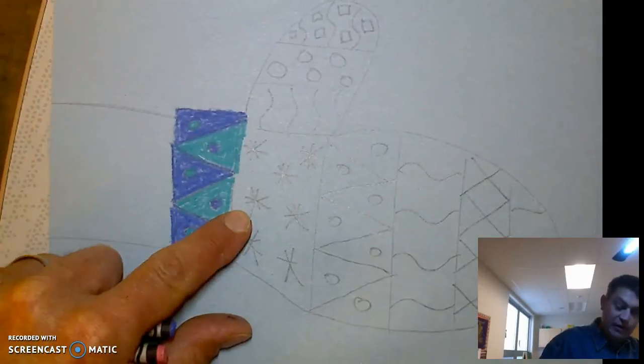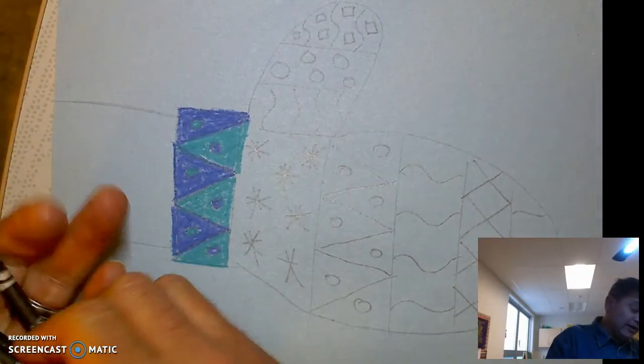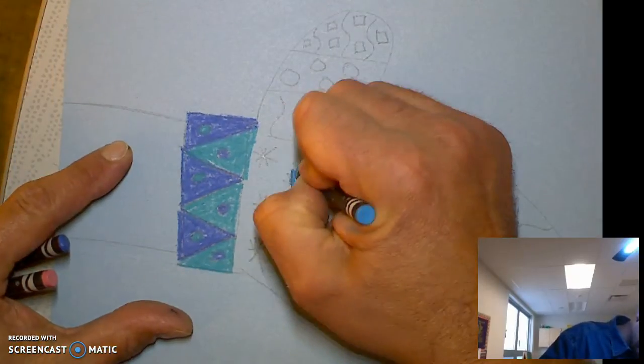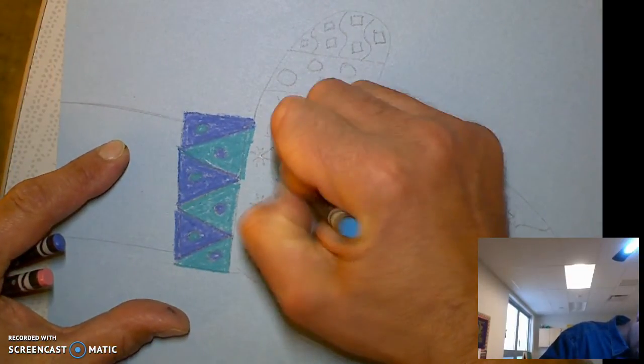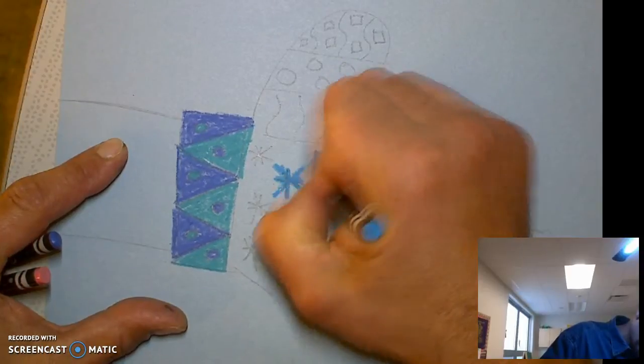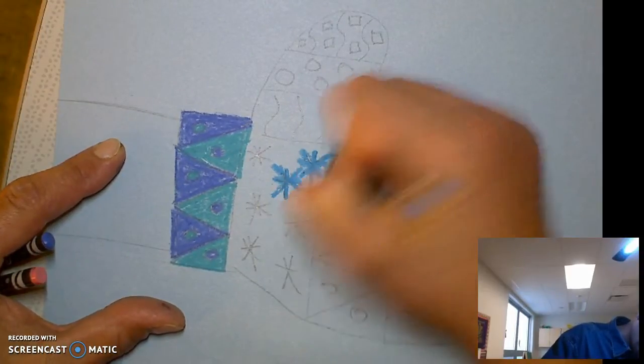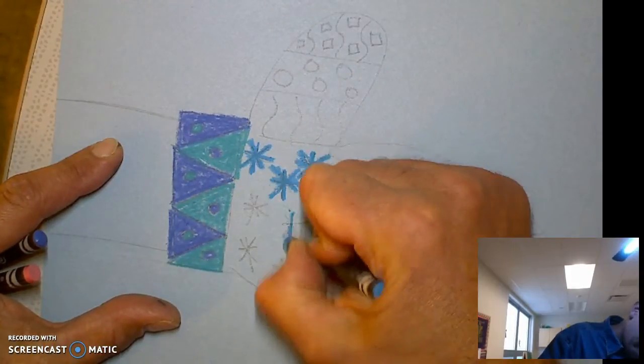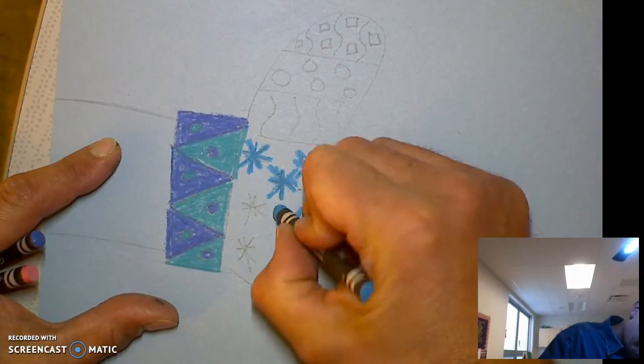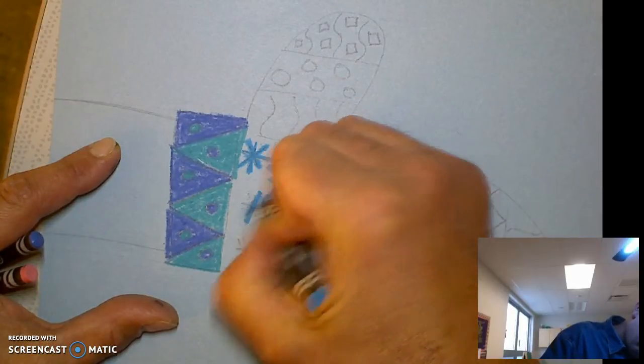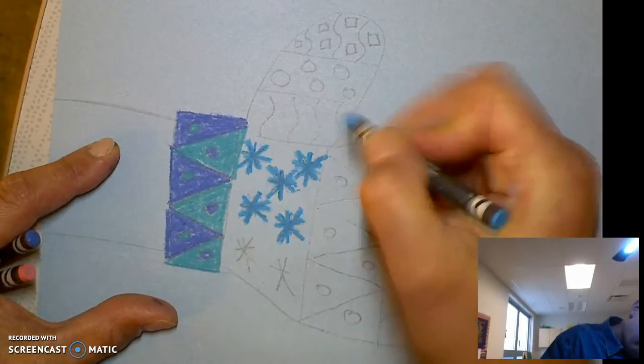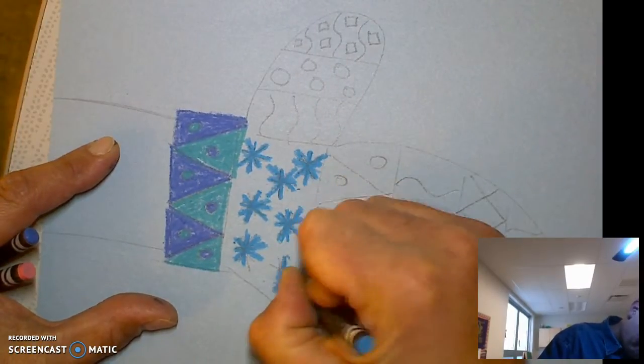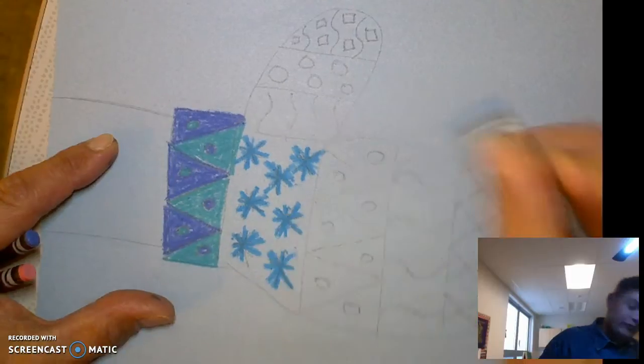Then I'll move on to this part. And maybe in this part I'll use this light blue for my snowflakes. And I'll do those first because they're thinner.